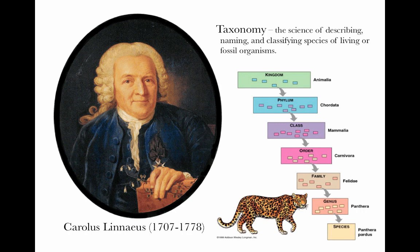The first time this kind of classification and naming system was really formalized was by a botanist named Carlos Linnaeus in the 18th century — the father of taxonomy. He developed the hierarchical classification system we still use today: kingdom, phylum, class, order, family, genus, species, based on overall similarities between organisms. Species with a great deal of similarity were grouped together into genera and so on, based on whatever similar features he could recognize and describe.